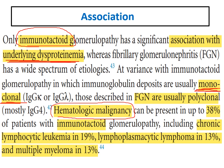The most common association with immunotactoid is with hematological malignancies. It is very important to search for hematological malignancy, as it is present in around 38 to 40 percent of cases. The most common is CLL — chronic lymphocytic leukemia in 19%, lymphoplasmacytic lymphoma in 13%, and multiple myeloma in 13%.